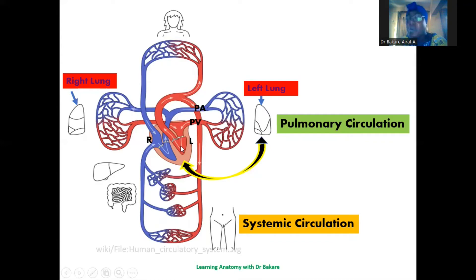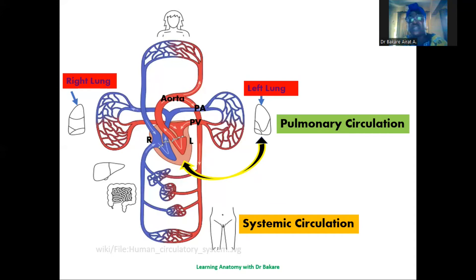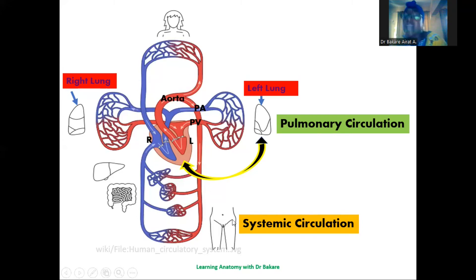From the left region where we now have oxygenated blood, this will be taken up by the aorta, which is the largest artery in the body. The aorta carries oxygenated blood and delivers it to the different regions of the body — both the upper part and the lower part. The circulatory pathway of delivering oxygenated blood through the aorta to the different cells of the body is called the systemic circulation, because it supplies the different systems of the body.